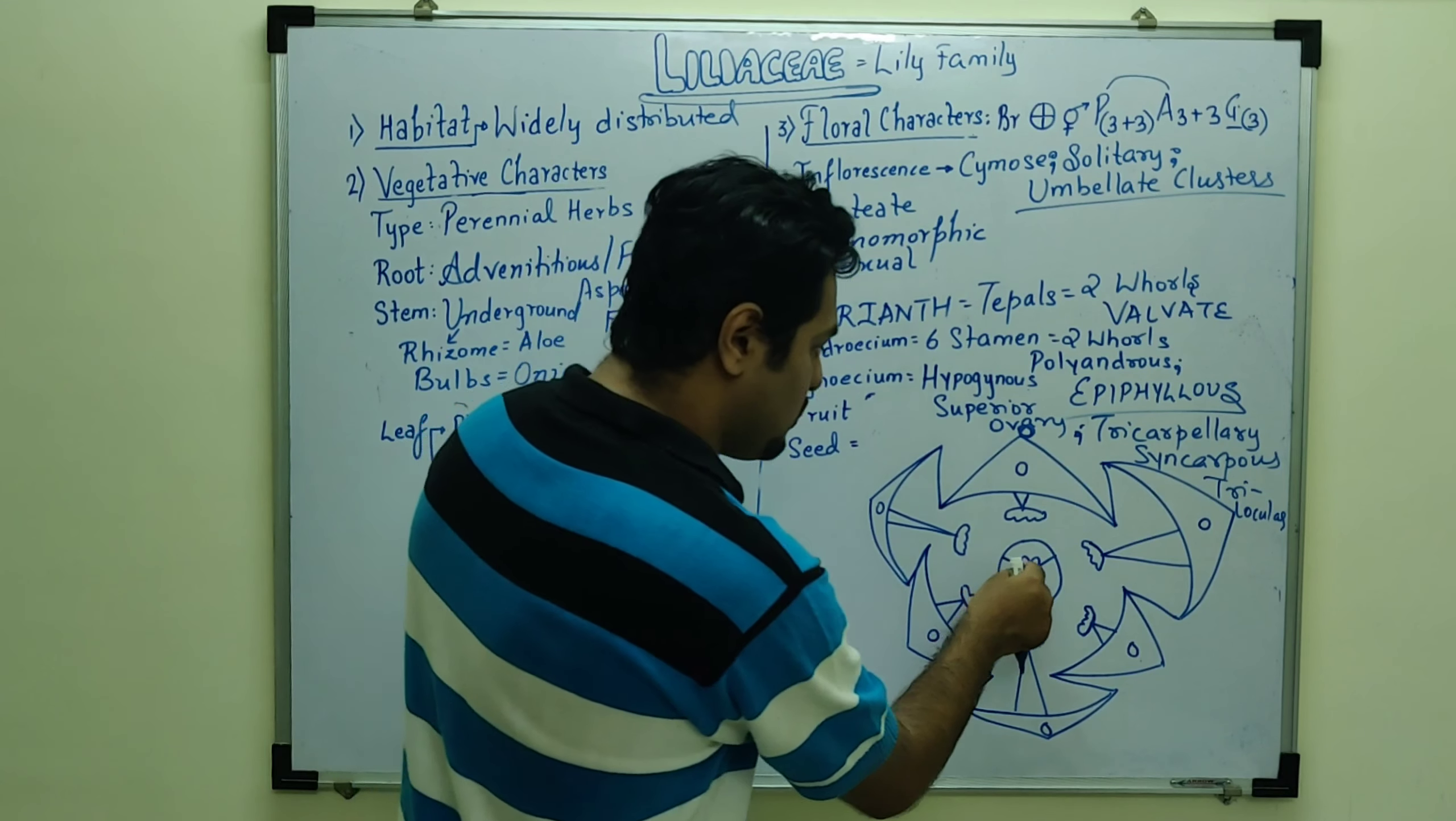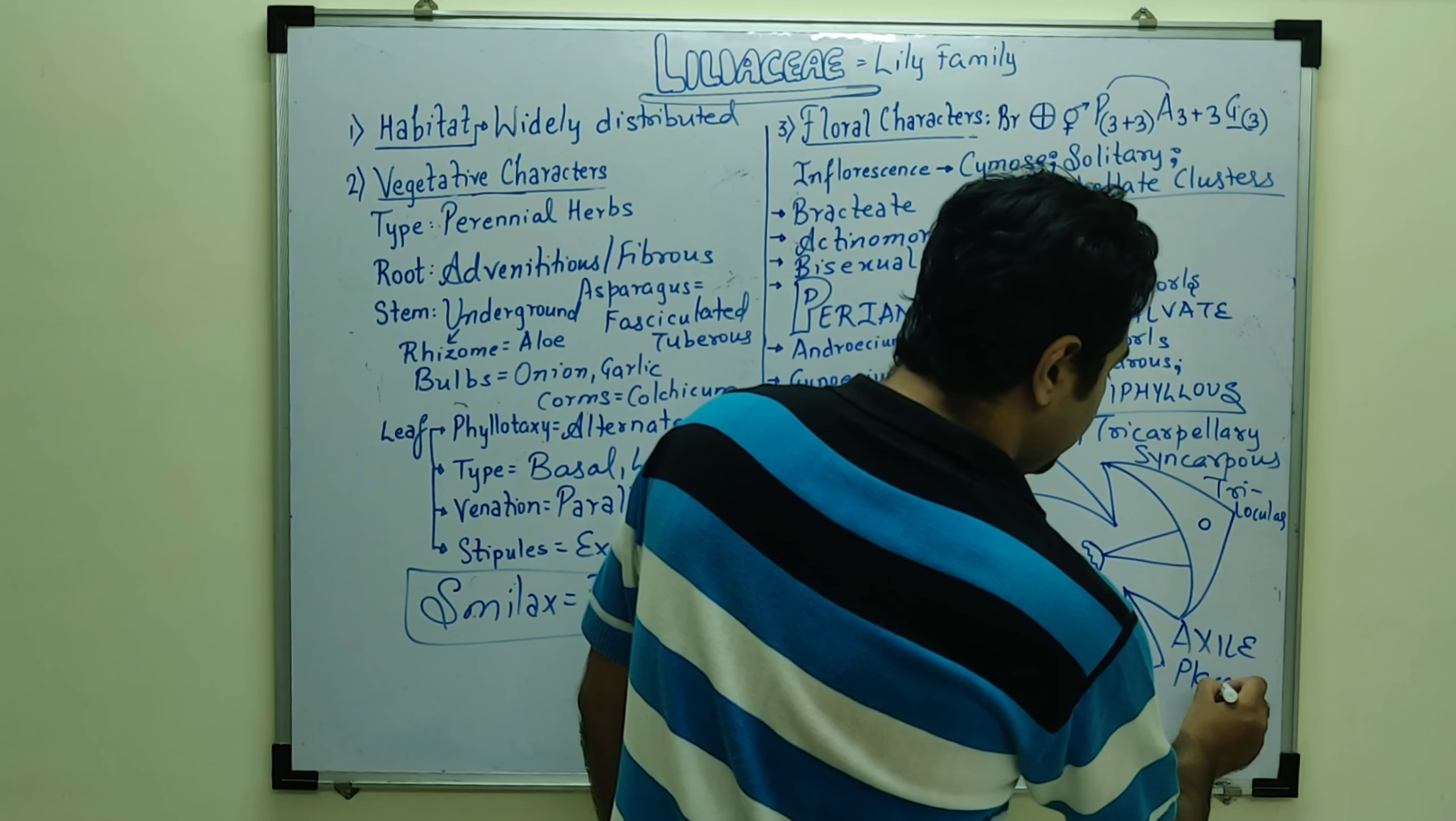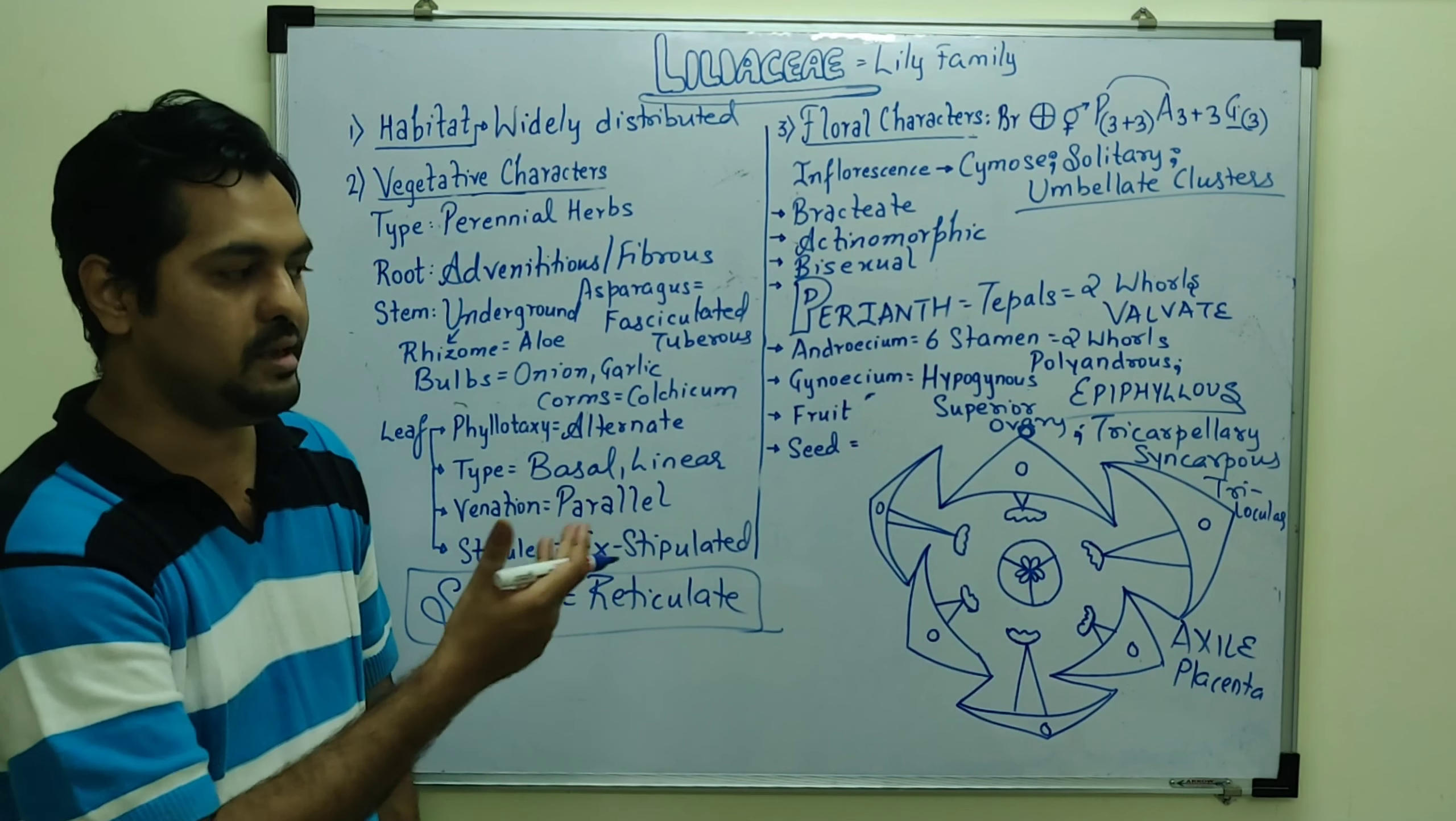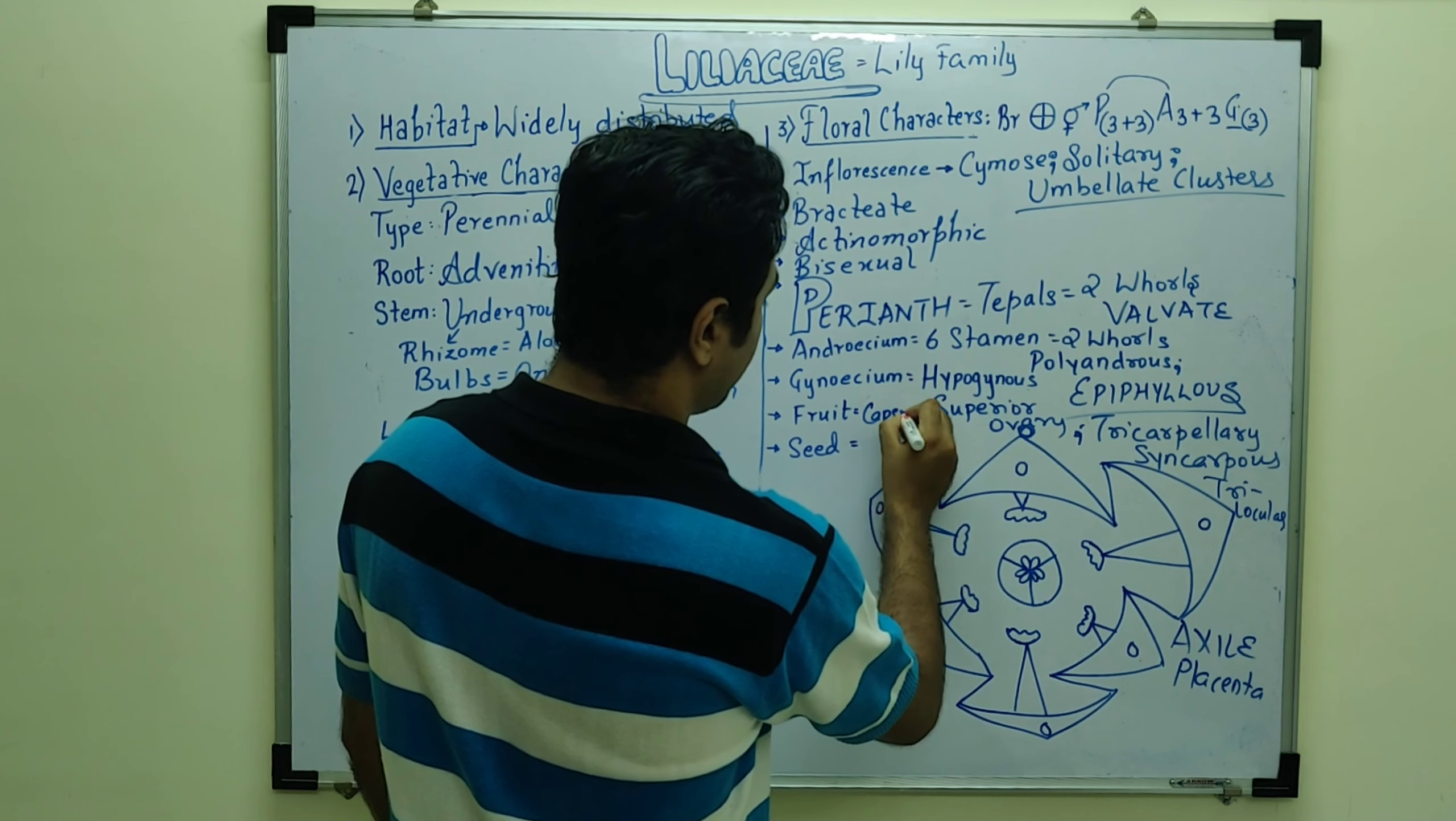Trilocular. Fabaceae monolocular, Solanaceae bilocular. Trilocular. Central axis, the ovules are arising axile placentation. Fabaceae marginal placentation, Solanaceae axile placentation.